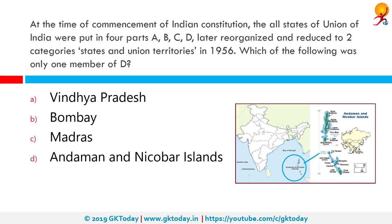At the time of commencement of the Indian constitution, all states of the Union of India were put into four parts A, B, C and D, later reorganized and reduced to two categories — states and union territories — in 1956. Which of the following was the only member of Part D? The correct answer is Andaman and Nicobar Islands. The Andaman and Nicobar Islands, one of the seven union territories of India, comprise 572 islands of which 37 are inhabited. On 1st August 1974, the Nicobar Islands were carved off into a separate revenue district. In 1982, the post of lieutenant governor was created. The islands send one representative to the Lok Sabha.